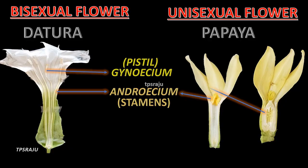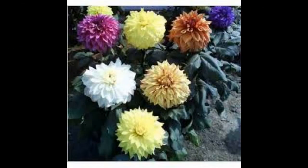A flower which has either androecium or gynoecium is called a unisexual flower. Examples of unisexual flowers are bitter gourd, cucumber, etc. A flower which has both androecium and gynoecium is called a bisexual flower. Examples of bisexual flowers are ipomoea, hibiscus, datura, etc.